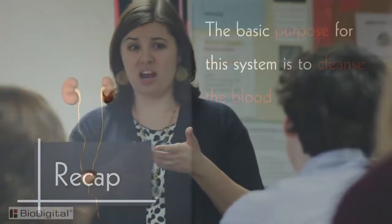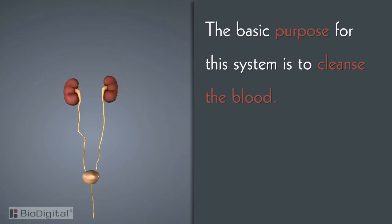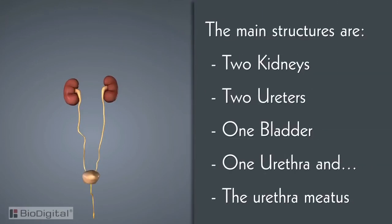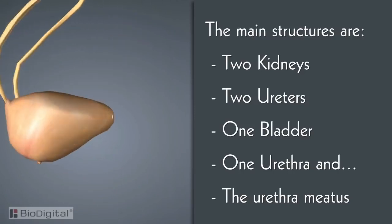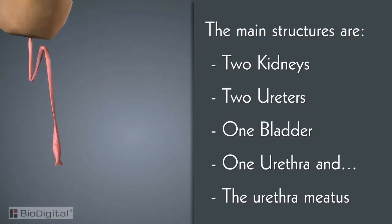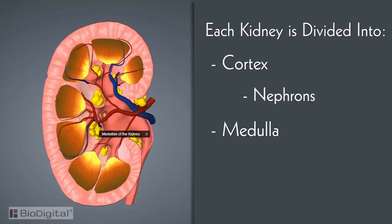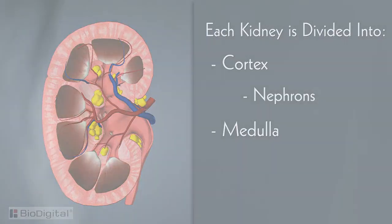To summarize: the basic purpose of the urinary system is to cleanse the blood by filtering out toxins such as excess sugars, salts, and other substances. The main anatomical structures are two kidneys, two ureters, one bladder, one urethra, and the urethral meatus. Each kidney is divided into the cortex and the medulla. Inside the cortex of both kidneys are thousands of microscopic filtering units called nephrons. Remember, it's important to drink lots of water in order for the kidneys and the urinary system to continue to function properly.